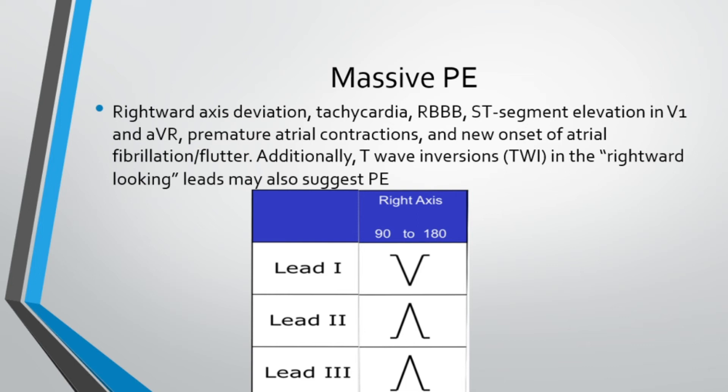Next look for right axis deviation, shown at the bottom of the slide. Then ask yourself: is there a right bundle branch block or ST elevation in V1 and AVR? Any signs of RVH — T-wave inversions in V1 through V4? Any T-wave inversions in rightward-looking leads such as inferior leads 2, 3, and AVF? If you have any of those with a strong history, think PE.